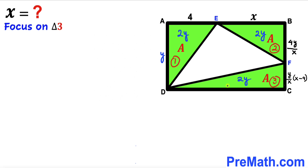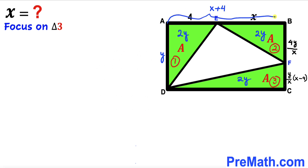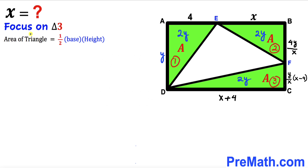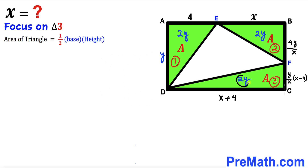Finally, let's focus on triangle 3. We can see that the whole AB length is X plus 4. Since AB length equals CD length, CD is also X plus 4. Recall the area of a triangle formula: area equals one half times base times height. The base of triangle 3 is Y over X times (X minus 4), the height is X plus 4, and the area is 2Y.